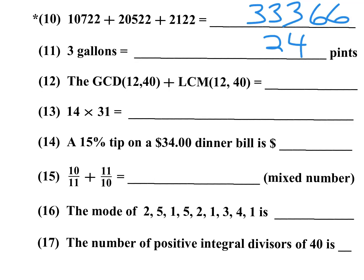Number 12 is a combination GCD and LCM question. Between 12 and 40, 4 goes into both, so the GCD is 4. For the LCM, take the product and divide one by the GCD: 40 divided by 4 is 10, times 12 is 120. Adding 120 plus 4 (for the GCD) gives 124.